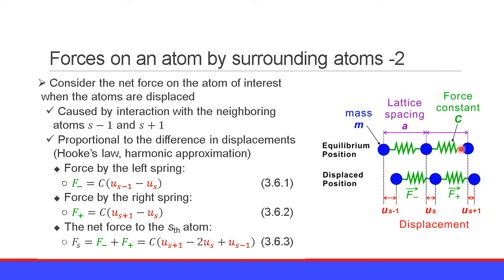The force from the right spring is f_plus equals c times (u_{s+1} minus u_s). The net force on atom s is f_plus plus f_minus, which equals c times (u_{s+1} minus 2u_s plus u_{s-1}), equation 3.6.3.